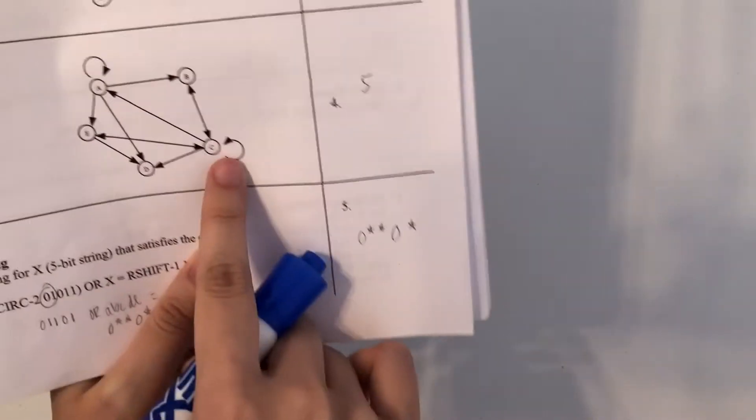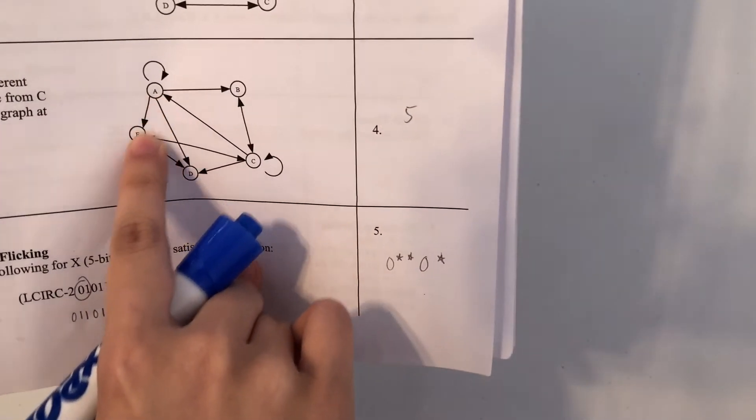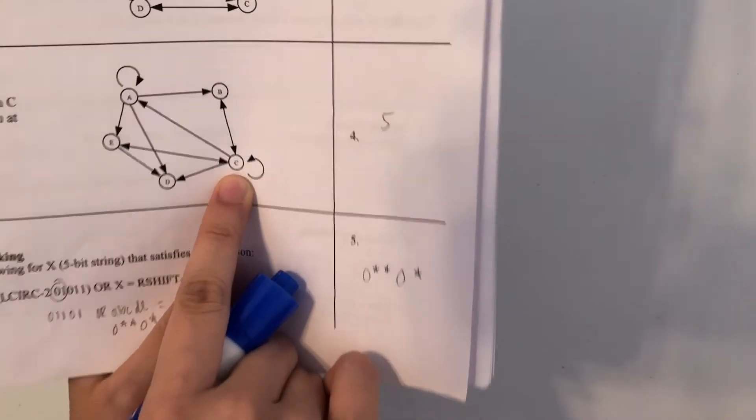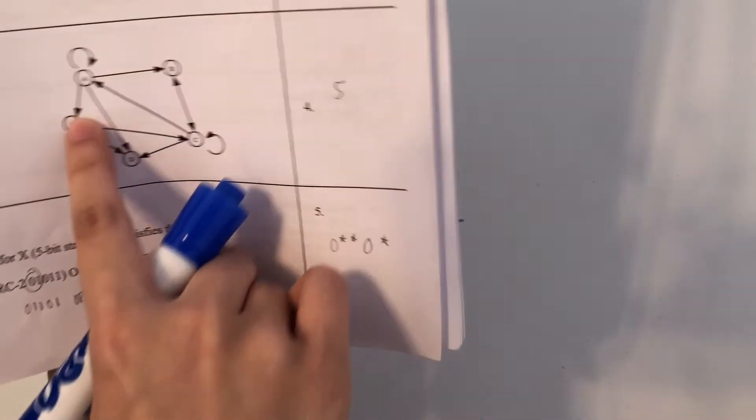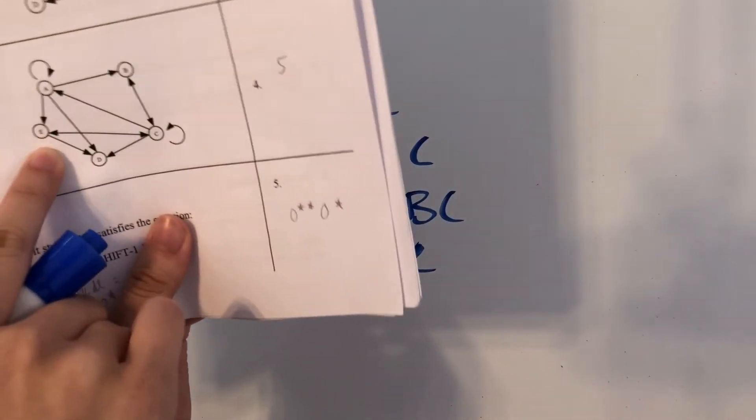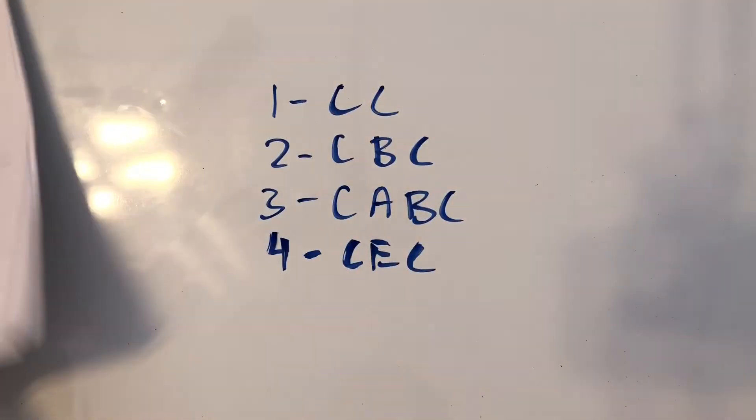Oh, actually, we have C to A to E to C because we just didn't try going from C to A to E, I believe, and going back to C. So that's our fifth one.